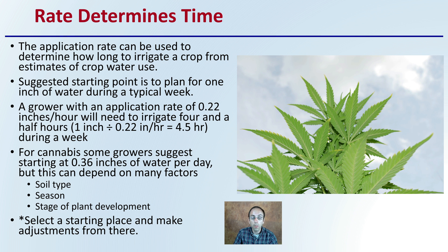Knowing your soil, the season, and the plant development stage will all play into exactly what fine-tuning adjustments you make. Hopefully this provides a starting point to allow you to efficiently water the plants without wasting water — which is a precious resource — while avoiding over-irrigating the plants and not keeping them too dry.